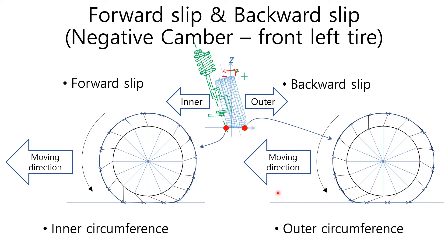A small negative camber angle is required to reduce tire wear during vehicle cornering and to increase tire grip. On the other hand, a positive camber angle decreases tire grip and increases tire wear.